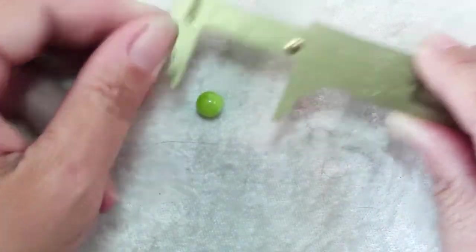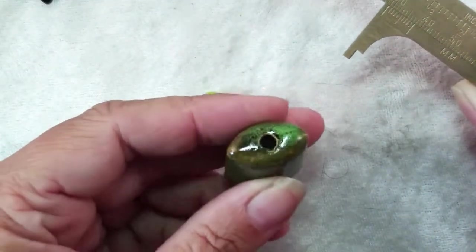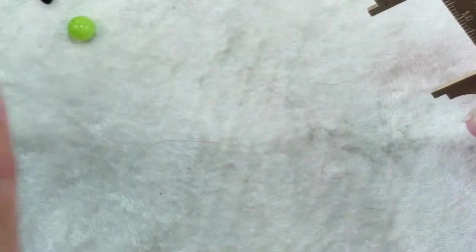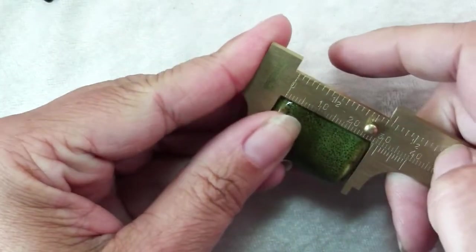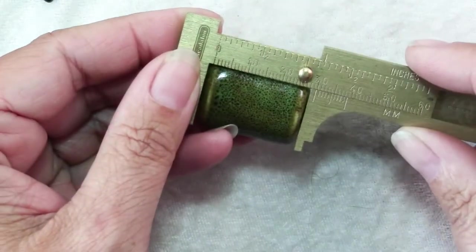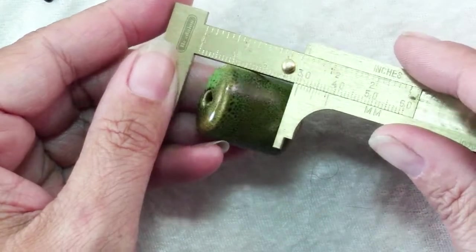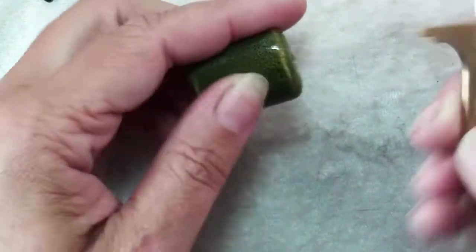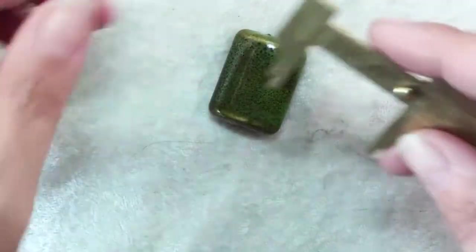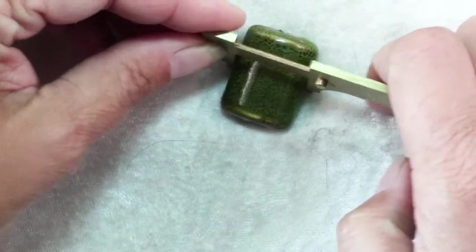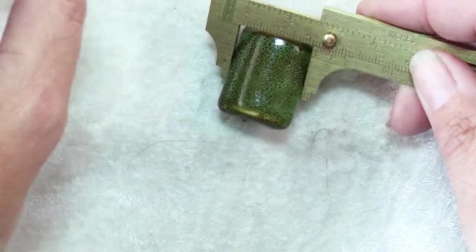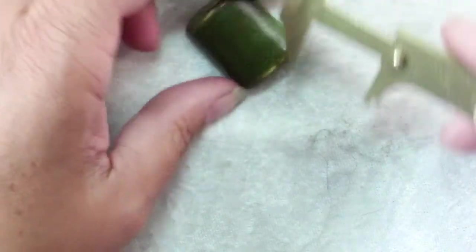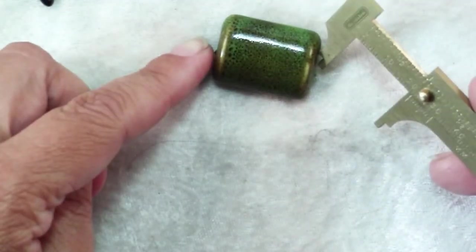When you measure beads, you usually measure them from hole to hole. This is an 8 millimeter bead because it's round with one dimension. Or you might have a big ceramic bead like this that's 30 millimeters. Rectangular beads often have two measurements—30 by 22—where the first dimension is from hole to hole.